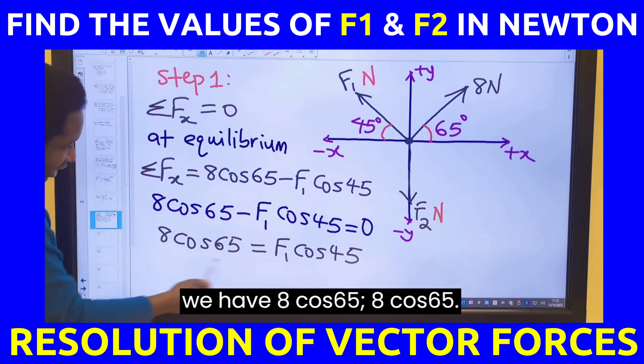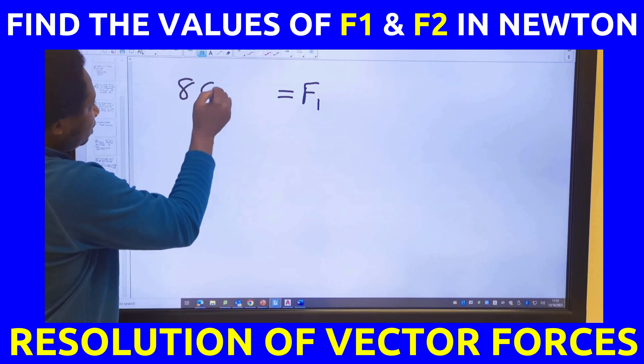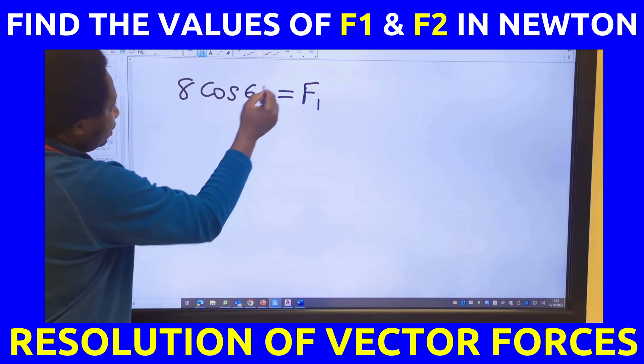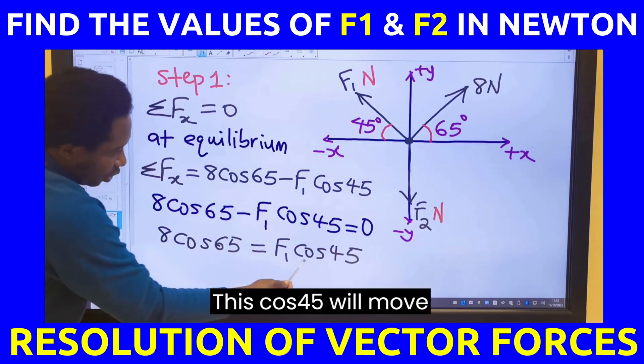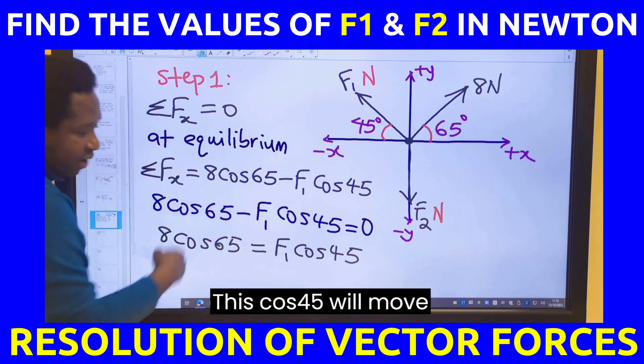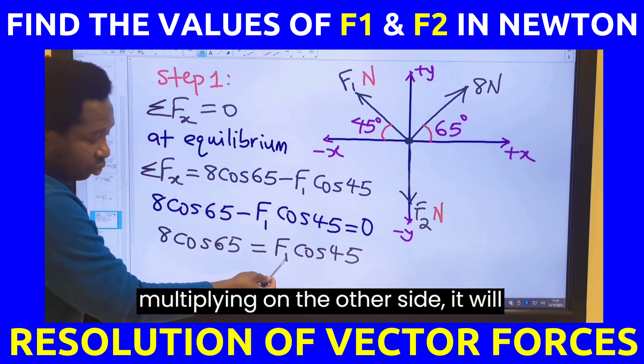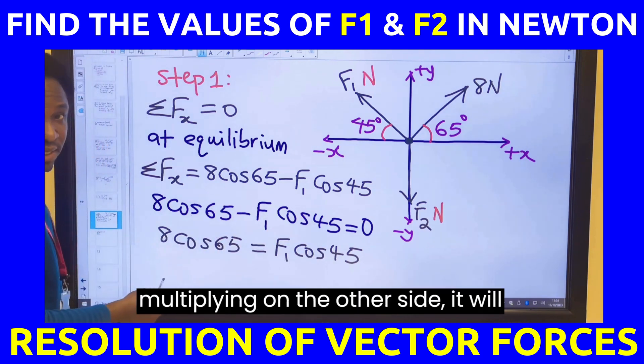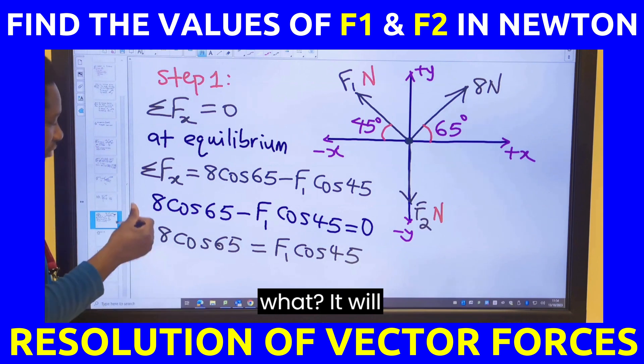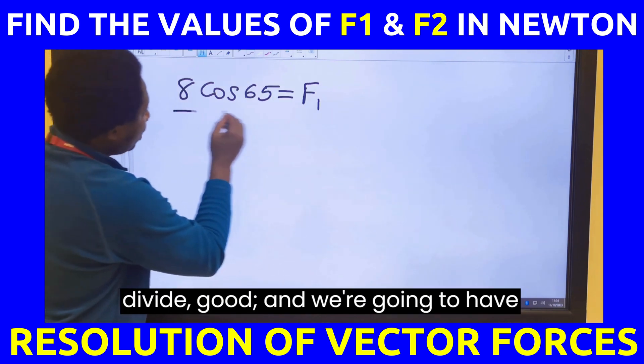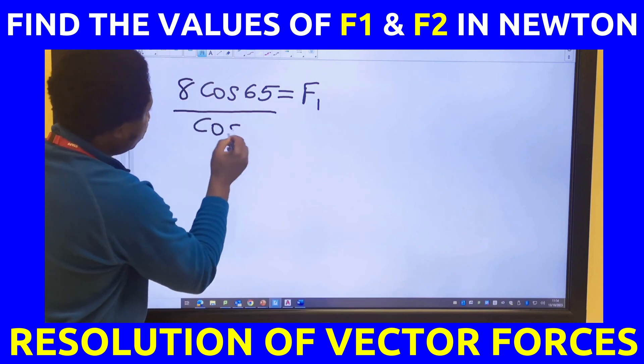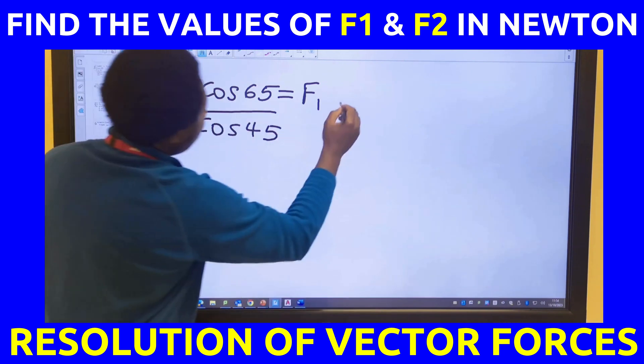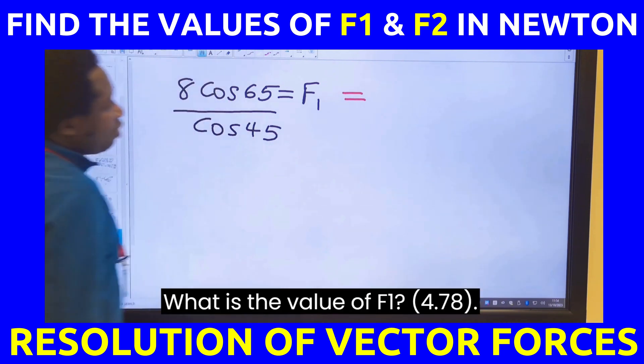Here we have 8 cos 65. This cos 45 will move across. Because it's multiplying, on the other side it will divide. And we're going to have here as cos 45. What is the value of F1?